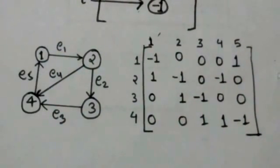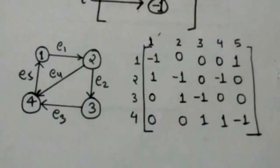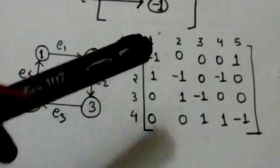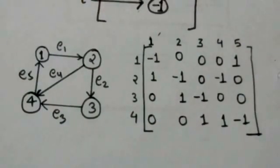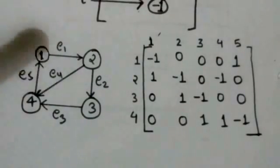Now see this digraph. This is the incidence matrix of this digraph. This digraph has four vertices and five arcs, so the incidence matrix of this digraph has four rows and five columns.